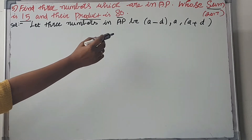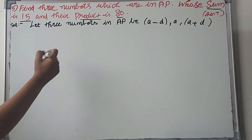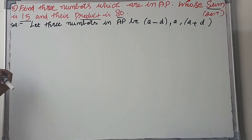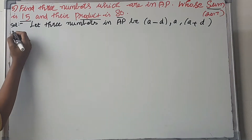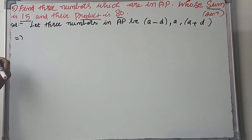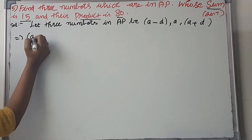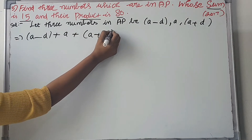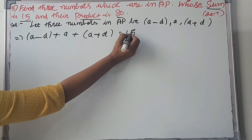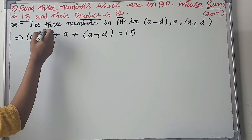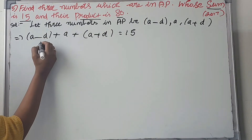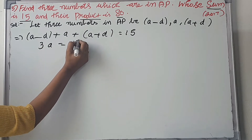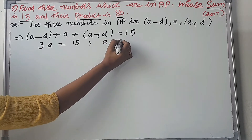Here A is the first term and D is the common difference. According to the first condition, the sum is equal to 15. So A minus D plus A plus A plus D equals 15. The minus D and plus D cancel, giving 3A equals 15, so A equals 5.